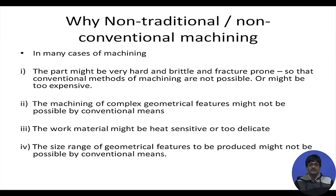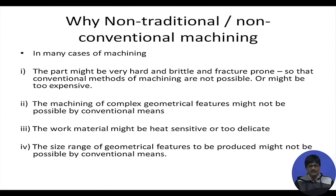Work piece material may also be heat sensitive or too delicate to withstand much force, making conventional machining inappropriate. Furthermore, we might be working in a size range where conventional machining is not possible — for example, a twist drill of high-speed steel with a diameter of 0.4 mm may be feasible, but below that with a high length-to-diameter ratio, conventional drilling cannot be used.